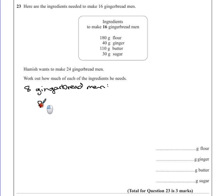I'm going to start off with flour. So, if the recipe makes 16 and I want to make 8, I'm going to half the recipe. So, it's 180 divided by 2. Half of 180 is 90 grams.